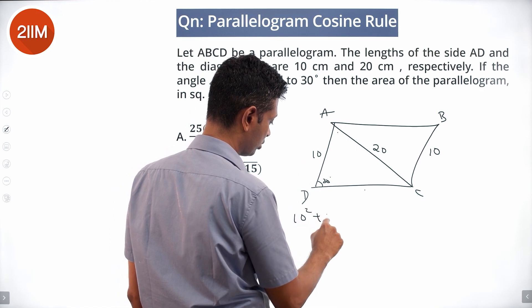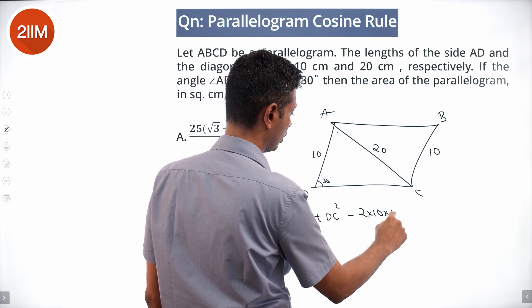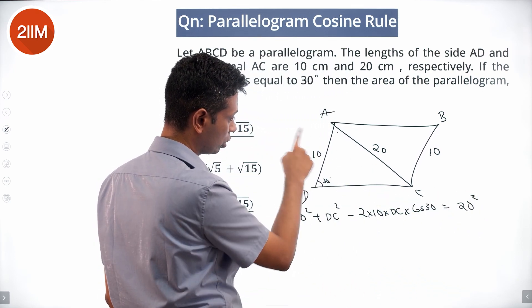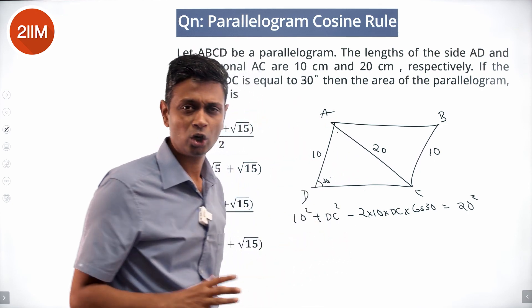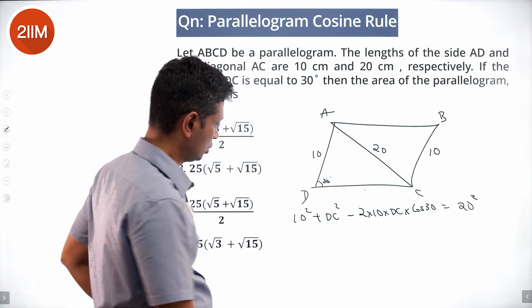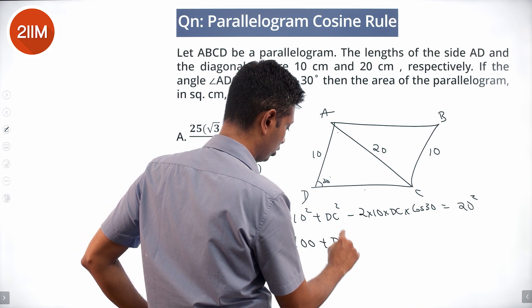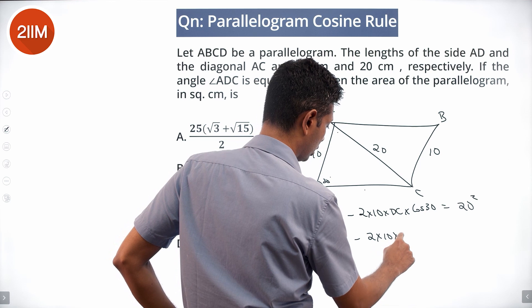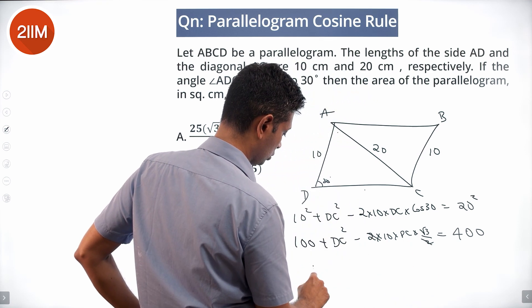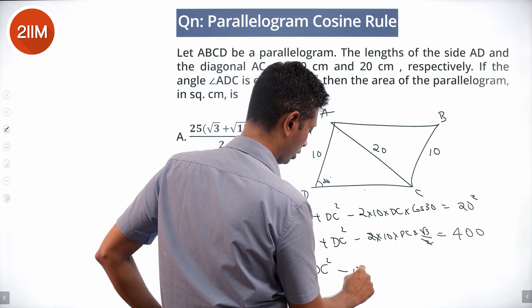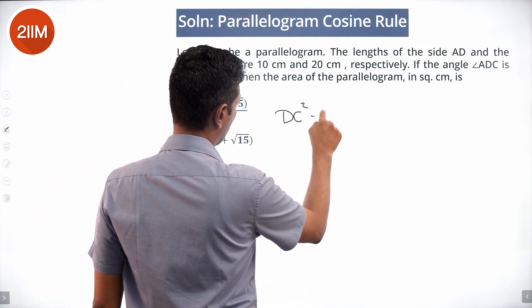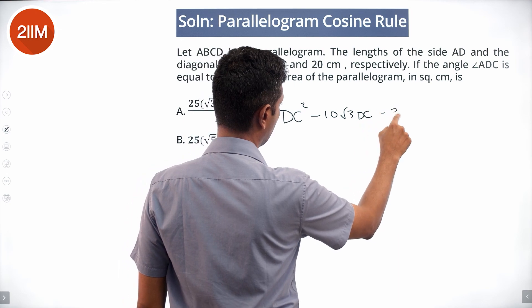Applying the cosine rule: 10 squared plus DC squared minus 2 times 10 times DC times cos 30 equals 20 squared. That is, this square plus this square minus 2 times the product of these two times cos of this angle equals that square. Cos 30 is root 3 over 2, so 100 plus DC squared minus 10 root 3 times DC equals 400, giving DC squared minus 10 root 3 DC equals 300, or DC squared minus 10 root 3 DC minus 300 equals 0.